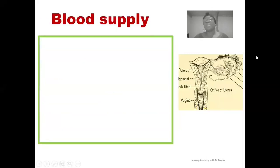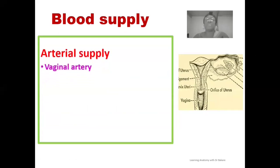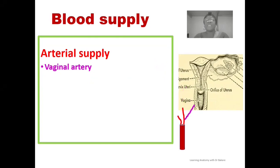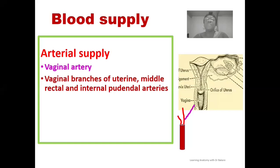Let's look at the blood supply of the vagina canal. The blood supply is principally from the vaginal artery, which is a branch from the anterior trunk of the internal iliac artery. The internal iliac artery is one of the terminal branches of the common iliac artery, and from the anterior trunk of the internal iliac artery we have the emergence of the vaginal artery. The vagina canal also receives contributory supply from branches of the uterine artery, the middle rectal artery, and the internal pudendal artery.